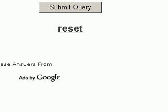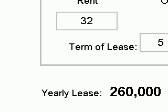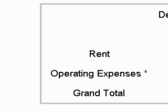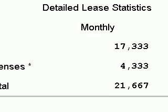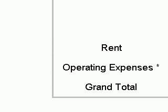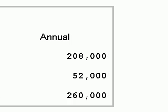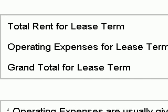The computer has calculated that our yearly lease is going to be $260,000. It has also calculated some detailed lease statistics for us — our rent, operating expenses, and a grand total on a monthly basis and a yearly basis. The computer has also determined our total rent for the lease term, total operating expenses, and grand total for the lease term.